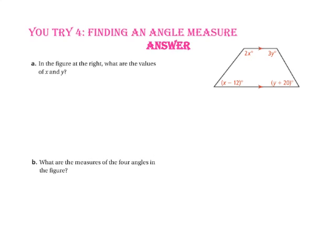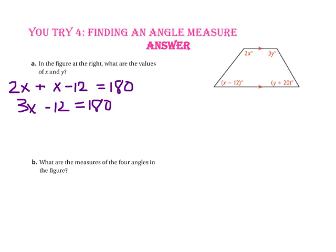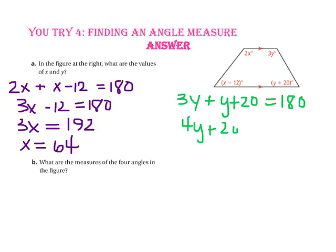Pause the video and do You Try number 4. For part A, we want to find the values of x and y. These two angles are same side interior, so 2x plus (x minus 12) equals 180. Using the distributive property and combining like terms, 3x minus 12 equals 180. Using the Addition Property of Equality, 3x equals 192. By the Division Property of Equality, x equals 64. For y, 3y plus (y plus 20) equals 180 because those two angles are also same side interior. Combining like terms, 4y plus 20 equals 180, giving 4y equals 160, so y equals 40.